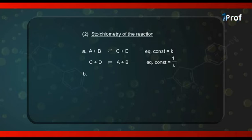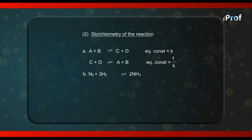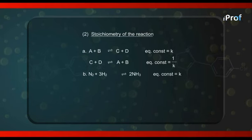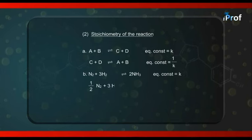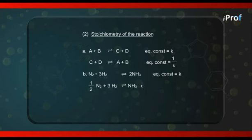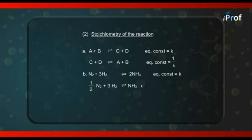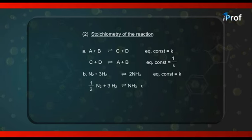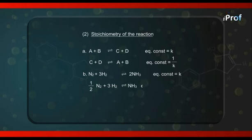Suppose I have the reaction N₂ + 3H₂ = 2NH₃, and at some constant temperature the equilibrium constant is K. If I write the equation as ½N₂ + 3/2 H₂ = NH₃, all gases of course, what is the value of the equilibrium constant? It becomes surprising — the reaction chemically is the same, nitrogen and hydrogen combining to give ammonia, but the numerical value of the equilibrium constant depends on how you represent the reaction.